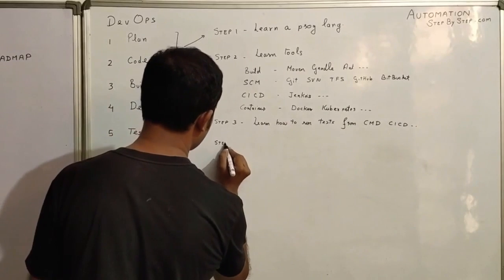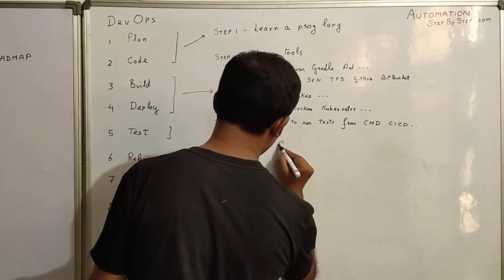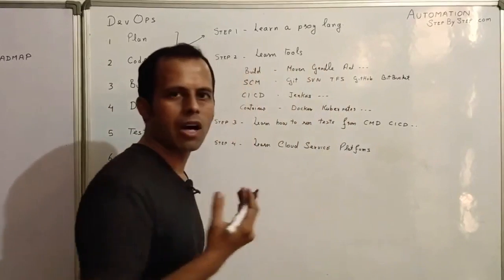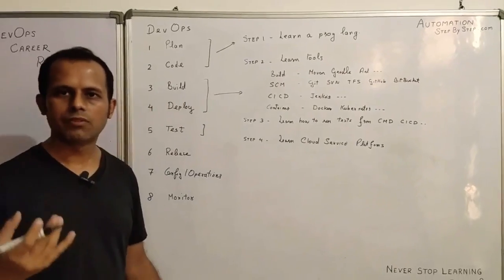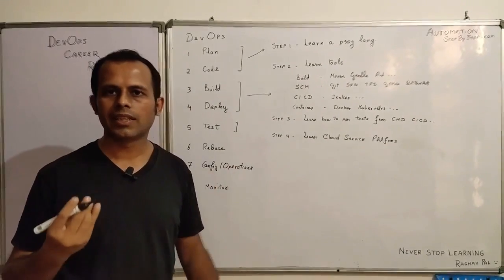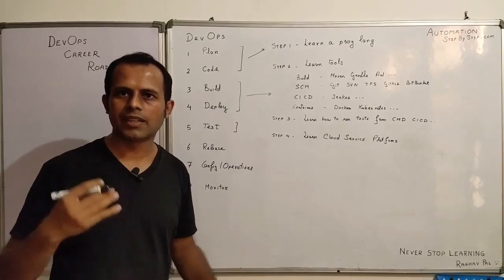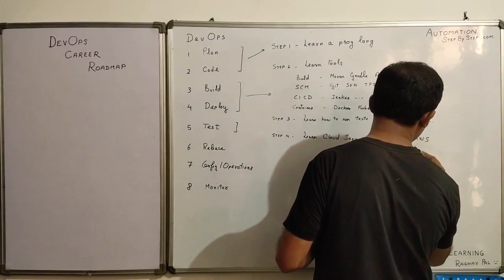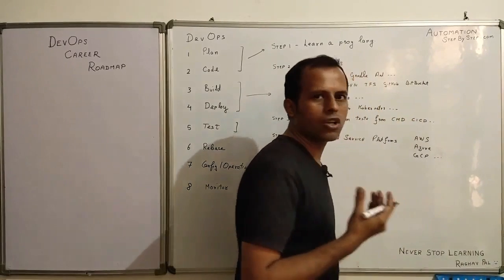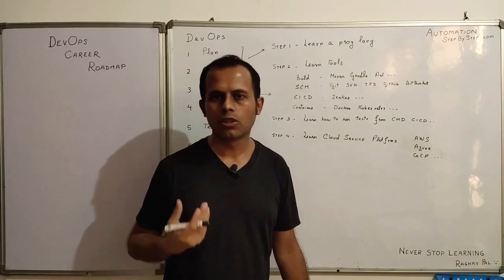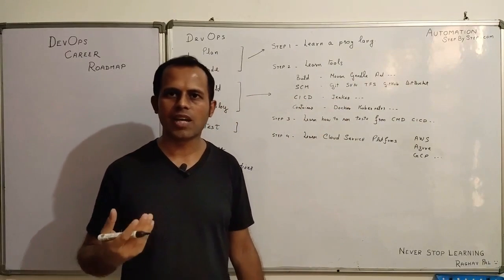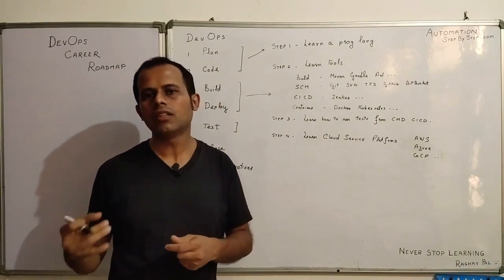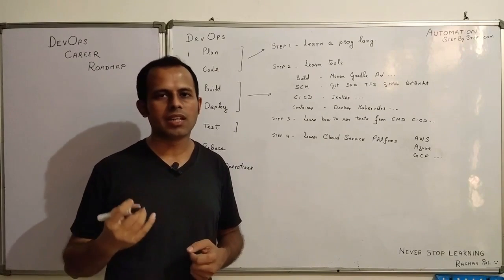Step number four is learn some cloud service platforms. This will help you in the entire process, but specifically in the release and configuration management and the infrastructure process. The platforms can be AWS, Azure, Google Cloud platform or any other platform based on your need and your interest. This will help you a lot to become a DevOps engineer or become a person in the DevOps profile.